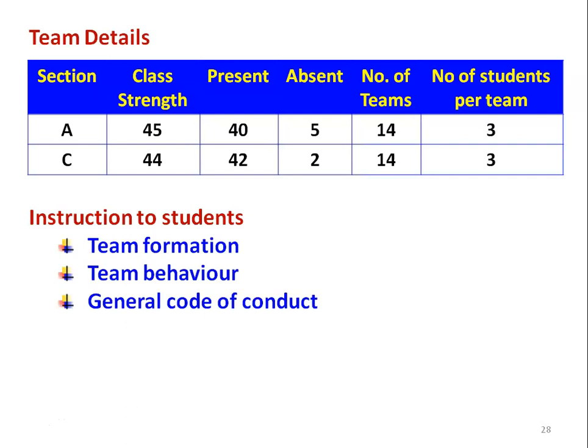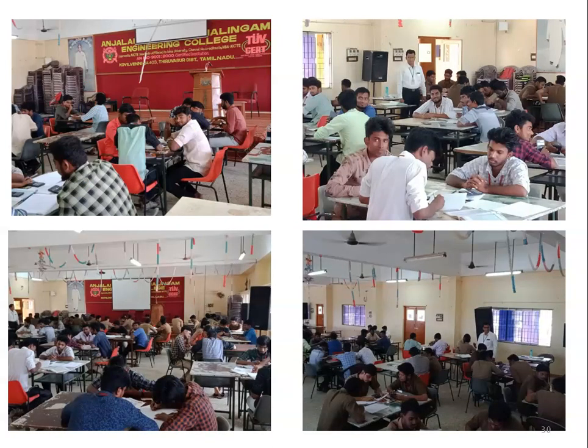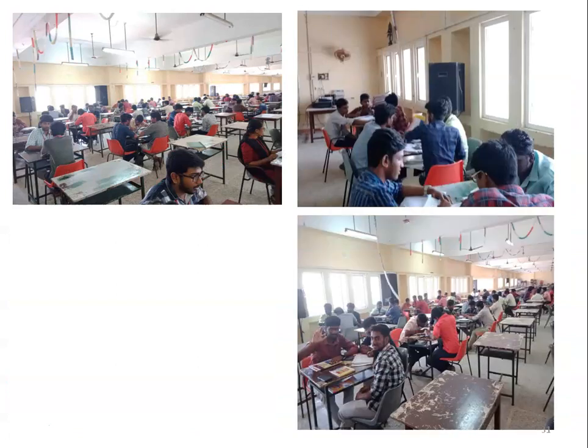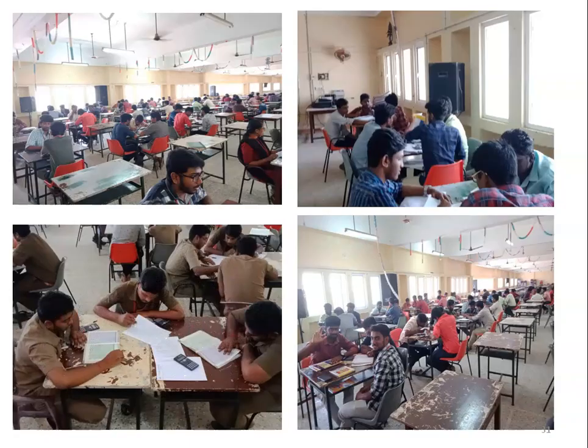Instructions were given to students about team formation, team behavior and general code of conduct. In team formation, we have to be very careful — at least there should be one above-average student in every team, so that the above-average student will help the other two students to learn better. There should be a distribution of students; not all three should be very good or all very bad. Five problems were given, and students had to solve all five in two hours. We monitored student performance and went around to support and help them whenever required.